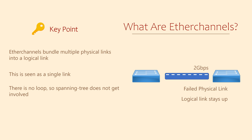This means that Spanning Tree doesn't need to recalculate or send TCNs or do anything like that. As long as at least one physical link is up, the logical link will stay up. You can usually have up to 8 physical interfaces in an EtherChannel. Some switches allow you to go as high as 16.